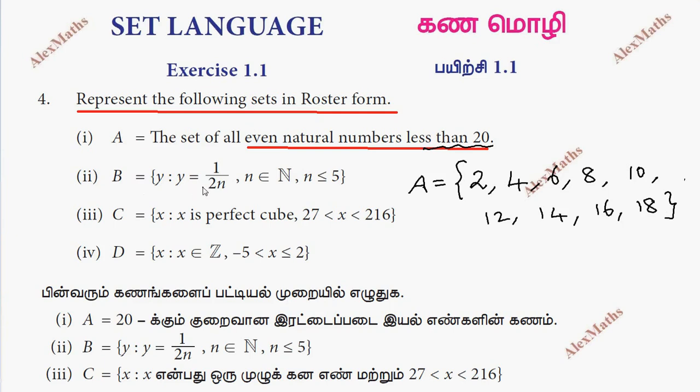Subdivision 2. Set B is y equals 1 by 2n, where n is a natural number less than or equal to 5. So set B equals: first natural number is 1, equals 1 by 2.